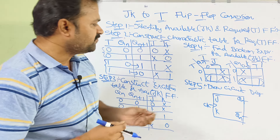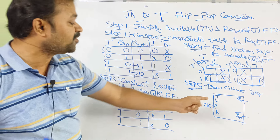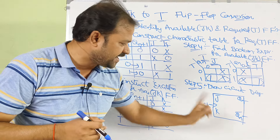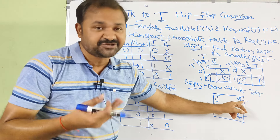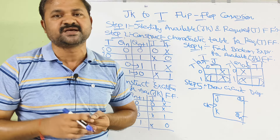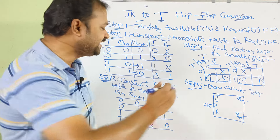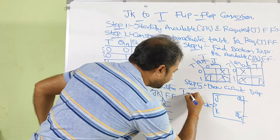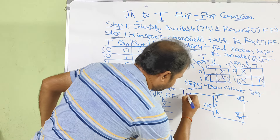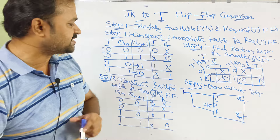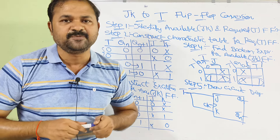Now let us see step 5: we have to draw the circuit diagram. The available flip-flop is the JK flip-flop, so J and K are the inputs, along with the clock pulse. Qn is the actual output, whereas Qn bar is the complemented output. Since the expression for J and K is T, the input T is passed to both J and K. This is the circuit diagram, and in this way we can convert the JK flip-flop to the T flip-flop.